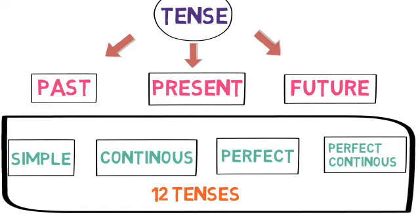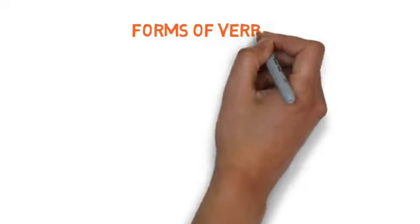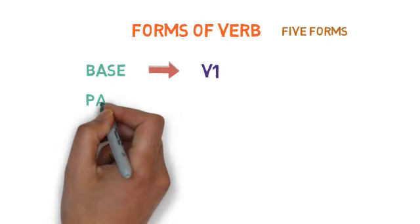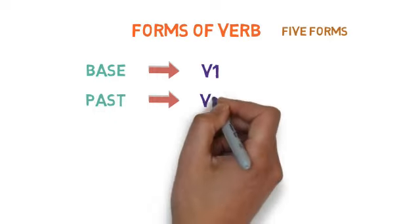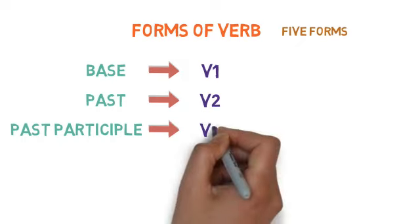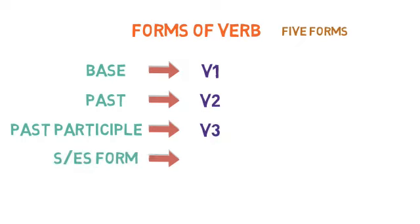Before that, we need to revise the forms of verb. Verbs are mainly divided into five forms: base form, we will denote it as V1; past form, we will denote it as V2; past participle, we will denote it as V3; S/ES form, we will denote it as V_s/es; and ING form, we will denote it as V_ing.